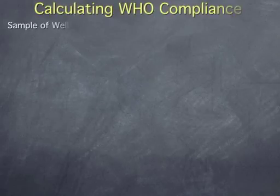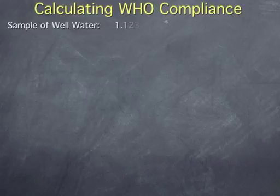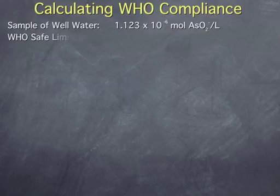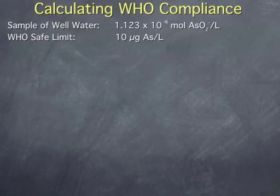Calculating World Health Organization compliance. Let's say that our sample of well water had a concentration of 1.123 times 10 to the minus 6 moles of arsenite per liter. What we want to determine is if this water is safe to drink. According to the World Health Organization, the safe limit is 10 micrograms of arsenic atom per liter.